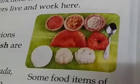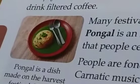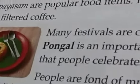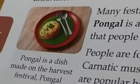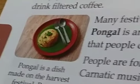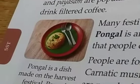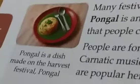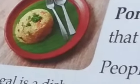People living in Chennai follow different religions and speak various languages. Tamil and English are commonly spoken here, and the state language is Tamil. Popular food items include curd rice, lemon rice, dosa, idli, sambar, medu vada, and payasam. People also like to drink filtered coffee. Many festivals are celebrated in Chennai; Pongal is an important harvest festival. People are fond of music and dance — Carnatic music and Bharatanatyam dance are popular here.